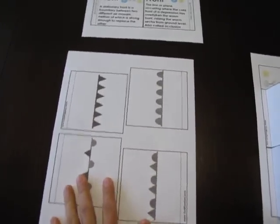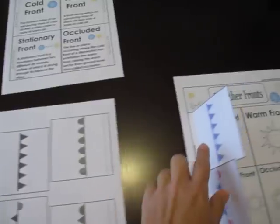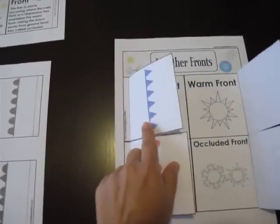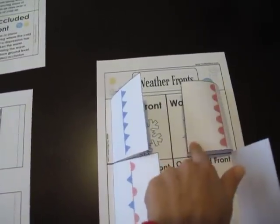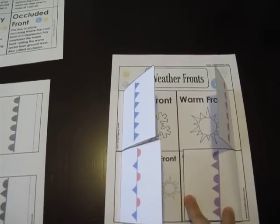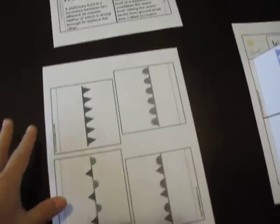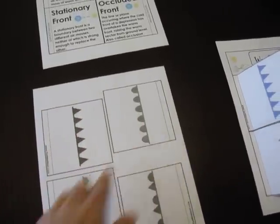And here's the flaps. So you can print in black and white or in color. I wanted to print it in color so that my kids would know that the cold front is blue, the warm front is red, and this one's purple and it's alternating the colors. But you can decide which way you want to do it. You can ask your kids to color and you can print it in black and white.